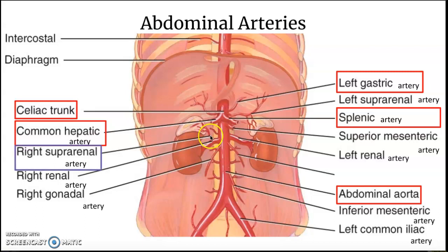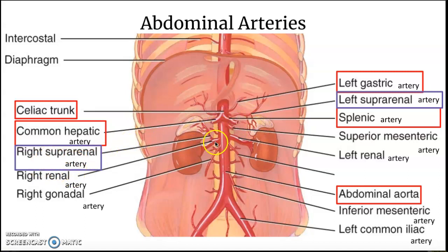Then we have the right suprarenal artery. Supra means above and renal means kidney, so it's above the kidney — and the gland that sits above the kidney is the adrenal gland. There's also the left suprarenal artery. The left suprarenal artery comes directly from the abdominal aorta to the adrenal gland, but the right suprarenal artery branches from the right renal artery.